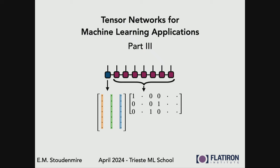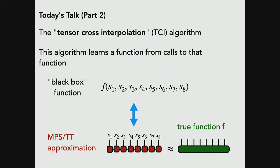This talk is going to be about a different tensor network algorithm. The point of today is to show you that unlike yesterday, where I focused on building an architecture and representations of data and then punted on training by saying just use gradient descent — today the idea is to show we could do really new and kind of radical algorithms that are super different from what you'd traditionally think of, and they might bring new capabilities. We're starting over with another one called tensor cross interpolation.